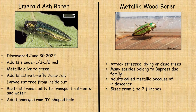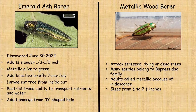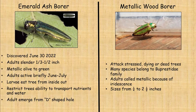If you look at the lookalike on the right, you'll see the metallic wood borer. The good thing about the metallic wood borer is that it only attacks stressed, dead, or dying trees — which makes you think you really need to keep your trees as healthy as possible. There are many different species belonging to the Buprestidae family. The adults are called metallic because of that iridescent color, and they range in size from about a quarter to two and a half inches depending on the specific insect.